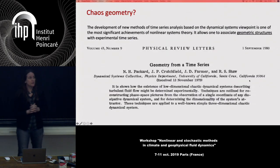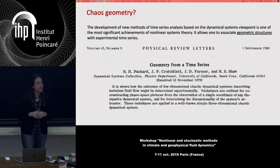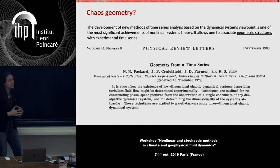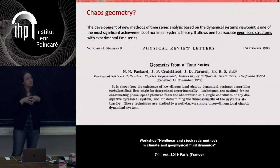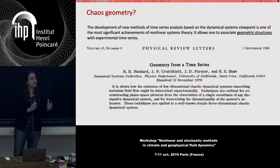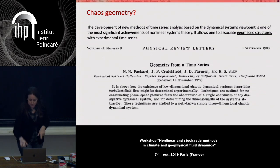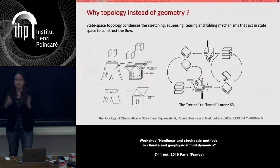Now we go to 1980: a Physical Review Letters paper discussing not chaos topology but chaos geometry — developing methods of time series analysis based on the dynamical systems viewpoint, trying to associate geometrical structures with experimental time series. This raises the question: why topology instead of geometry?